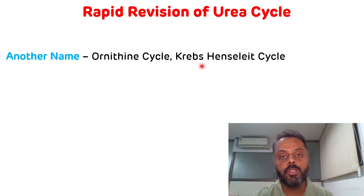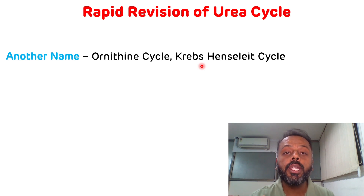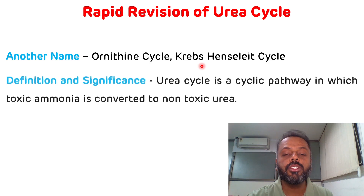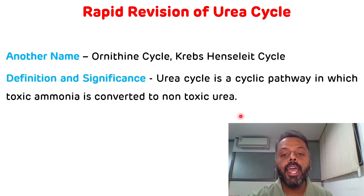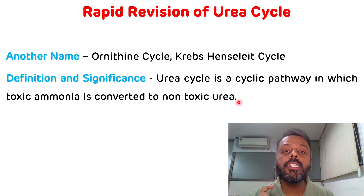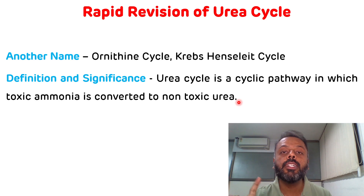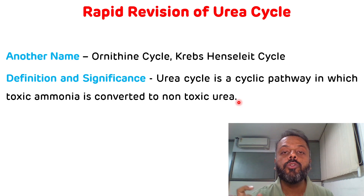The definition and significance of the urea cycle: the urea cycle is the cyclical pathway in which toxic ammonia is converted into non-toxic urea in the liver, and this urea is excreted in the urine. The urea synthesized at the end of the urea cycle is an important marker for the assessment of renal function. It is included in the renal function test, and the normal level of blood urea is 15 to 45 milligrams per deciliter; this urea level is increased in various kidney diseases.